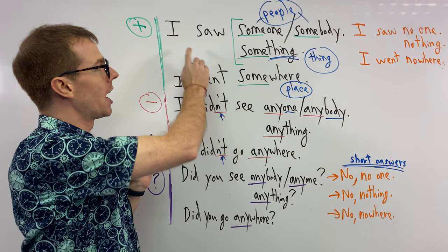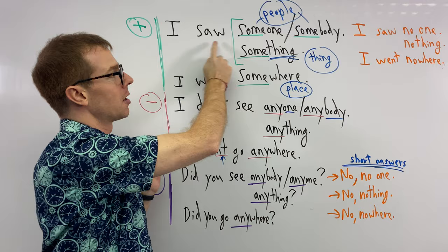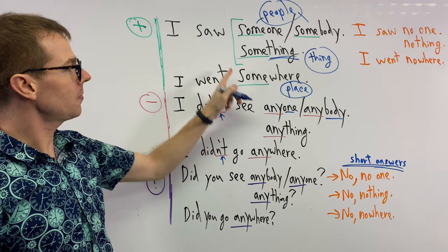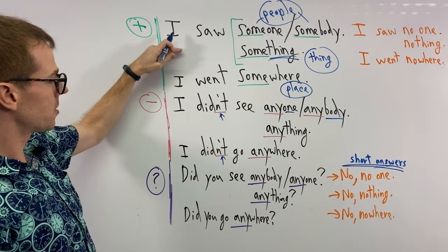I saw someone, I didn't see anyone. I saw somebody, I didn't see anybody. Same for our thing. I saw something, I didn't see anything. I went somewhere, I didn't go anywhere. Positive to negative, you have to change.